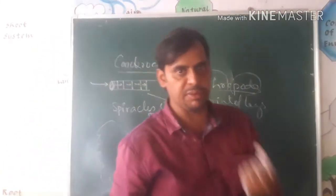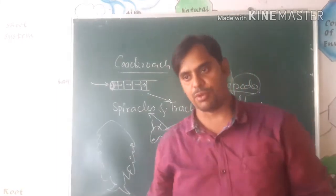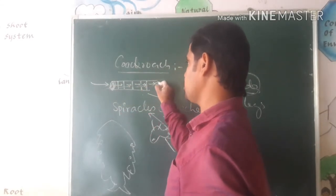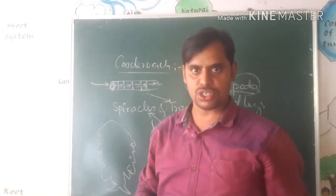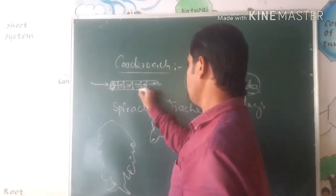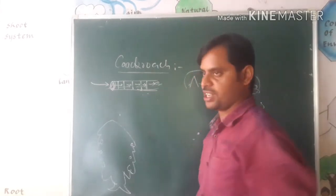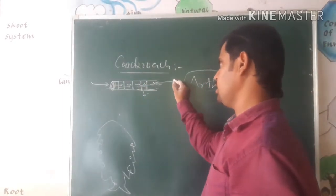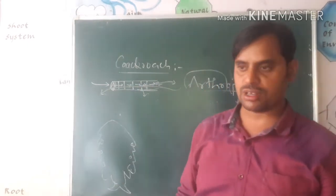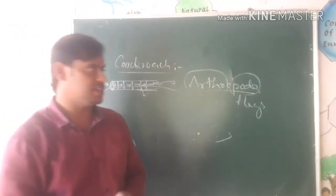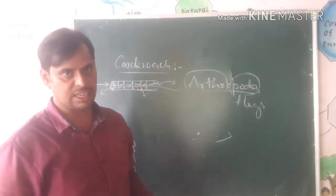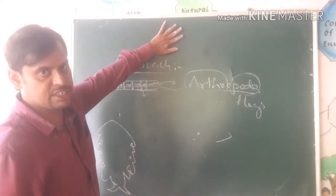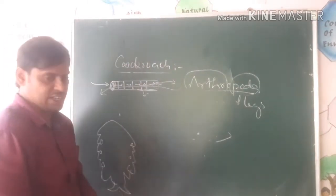Cockroach does not have hemoglobin, so the blood of cockroach is white in color. The inhaled gas with oxygen directly enters into the blood of the cockroach. This is called an open circulatory system because blood vessels are absent in the cockroach. Through the trachea, oxygen enters in and carbon dioxide comes out from the organs. This process is called tracheal respiration — the respiration process in insects is called tracheal respiration.